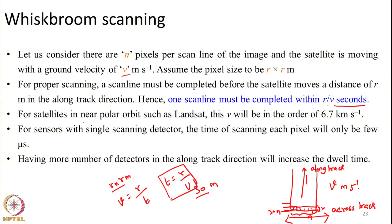For satellites in near-polar orbit such as Landsat, velocity will be around 6.5 to 7 kilometers per second. Hence for a line scanner with only one detector element, or a whisk broom scanner with a small number of detectors, the dwell time will be very small — on the order of microseconds. Having more detectors in the along-track direction will increase the dwell time by some extent.